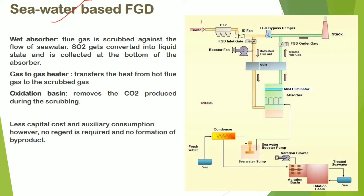Sea water based FGD: the flue gas passes through three stages. In the wet absorber stage, flue gas is scrubbed against the flow of sea water; sulfur dioxide gets converted into liquid state and is collected at the bottom of the absorber. A gas-to-gas heater transfers heat from the flue gas to the scrubbed gas. Then an oxidation basin removes the carbon dioxide produced during scrubbing. The capital cost of this type of FGD is less because no reagent is required and there is no formation of by-product. However, treating sea water and plant location may be a factor of consideration.